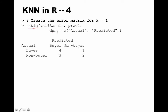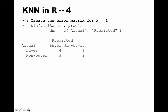Looking at the k=1 error matrix: of the five actual buyers, the model predicts four correctly as buyers and one as a non-buyer. Of the five non-buyers, it predicts three as buyers and two as non-buyers. So it's not doing a great job on non-buyers. This is the error matrix for k=1.